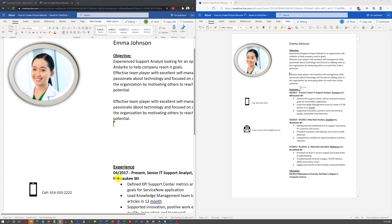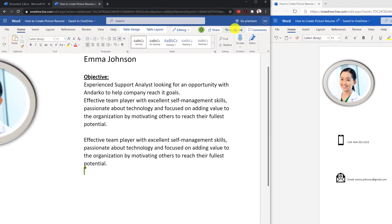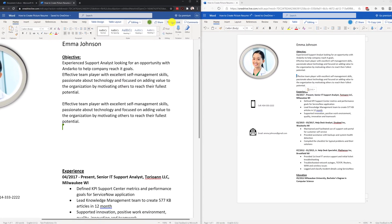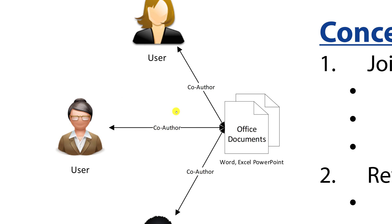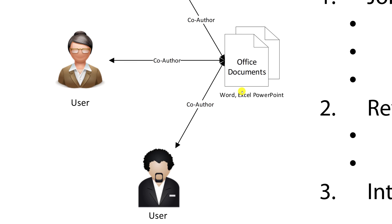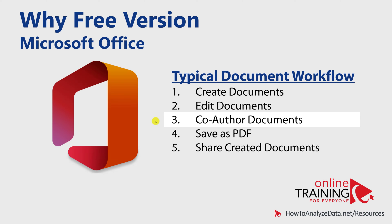Co-authoring means you might send a link to other people and ask them to edit your document. You typically do this by using the share feature in Office documents or by copying the link and sending it via email. Co-authoring is much more effective when there is one shared copy of the document in the cloud and multiple people can access and make edits, making the free version of Microsoft Office ideal.